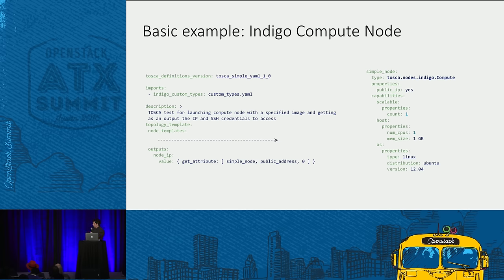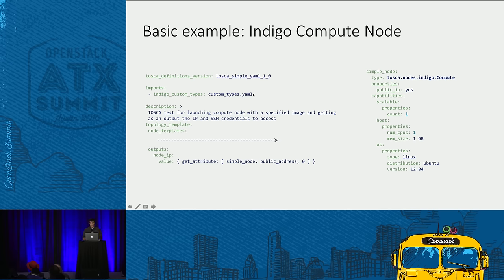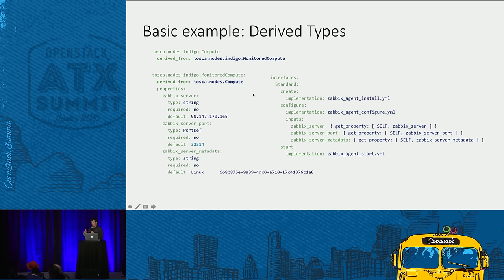Looking at how TOSCA templates work: if you're used to Heat and HOT, it looks very similar — it's YAML with slightly different constructs. In this example, we define an Indigo compute node, requiring a public IP and certain properties. TOSCA has the ability to define derived types. An Indigo compute node is actually an Indigo monitor compute, which allows defining common things in one place. We say: deploy a Nova server in OpenStack, also configure it as a service server at this endpoint with extra metadata.